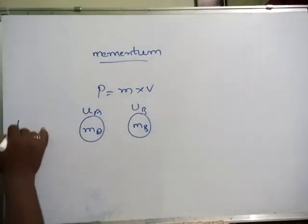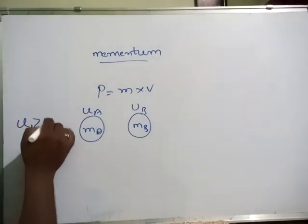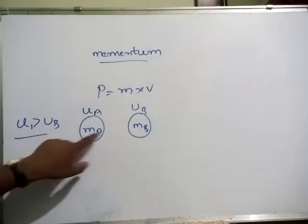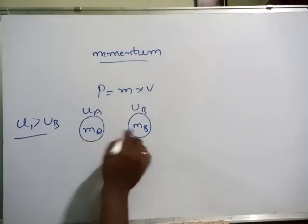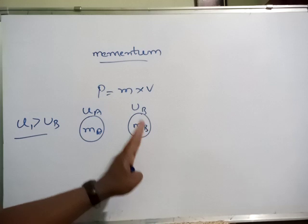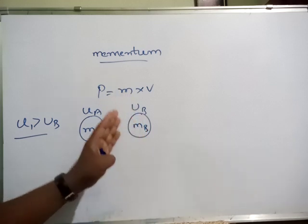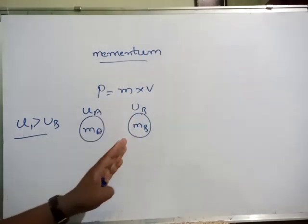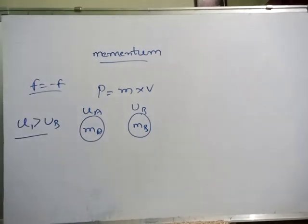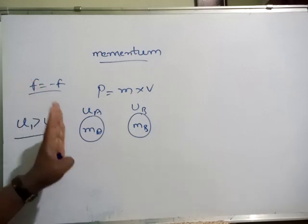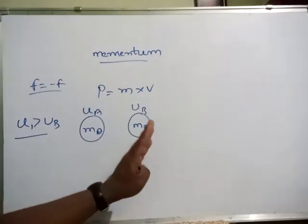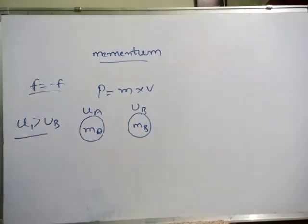As you know very well, if UA is greater than UB, definitely there is a chance of collision between these two balls. The first ball collides with the second ball, meaning A exerts some force on ball B. As per Newton's Third Law of motion, for every action there is an equal and opposite reaction. If one object applies some force on another object, the second object also will give the same amount of force in the opposite direction.